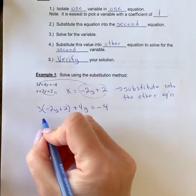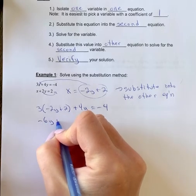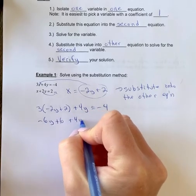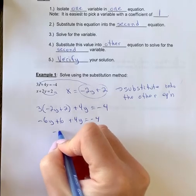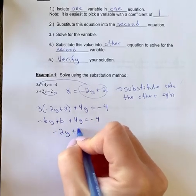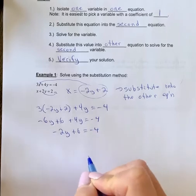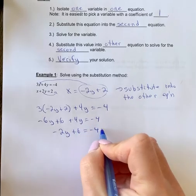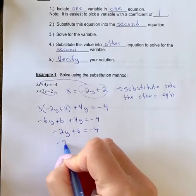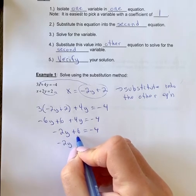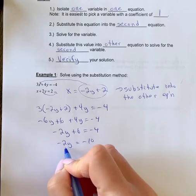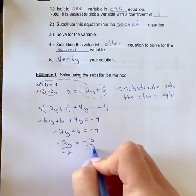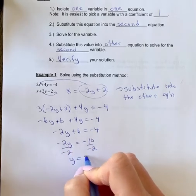We're going to multiply the three through the brackets and get negative 6y plus 6 plus 4y equals negative 4. We're going to combine like terms, so I get negative 2y plus 6 equals negative 4. I want to isolate y, so I'm going to move 6 to the other side. Negative 2y, so I'm going to subtract 6. Negative 4 minus 6 is going to give me negative 10. Then I'm going to divide off the negative 2 and y equals 5.